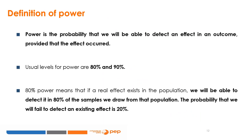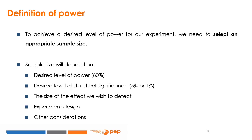Power is the probability that we will be able to detect an effect in an outcome, provided that the effect occurred. Usual levels for power are set at 80% and 90%. 80% power means that if a real effect exists in the population, we will be able to detect it in 80% of the samples we draw from that population; the probability of failing to detect an existing effect is 20%. To achieve a desired level of power, we need to select an appropriate sample size — this is where power and sample size calculations come in.